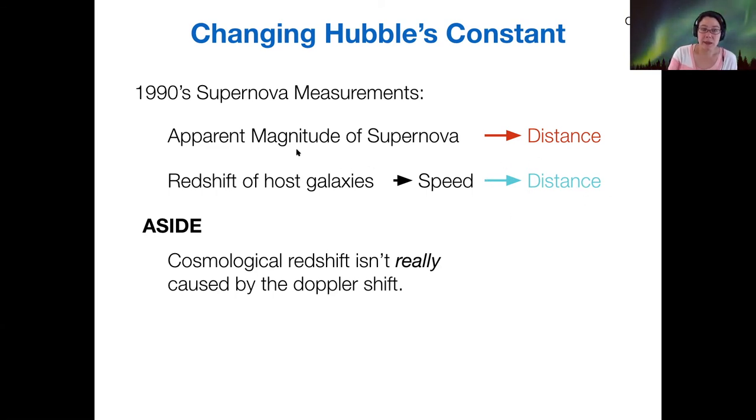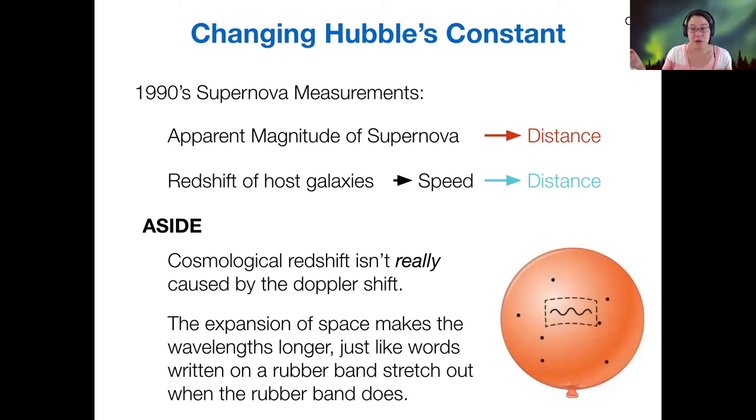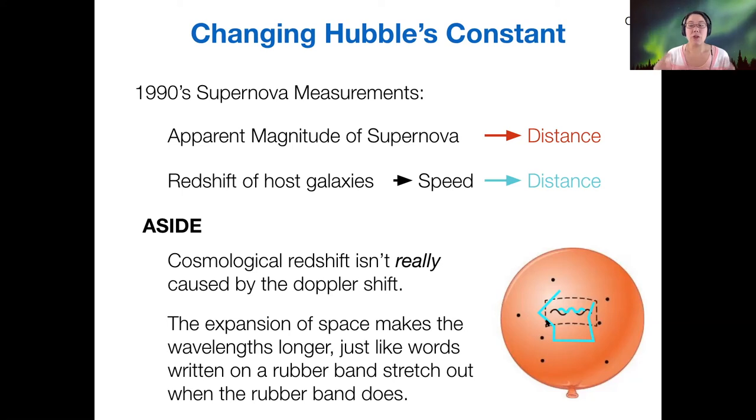And it's worth pointing out now that this is an imperfect way to think about Hubble's law as a method for calculating distance because the cosmological redshift is not really caused by the Doppler shift. So we think about moving objects causing Doppler shifts. So we think about redshift as being connected to speed. But really, the expansion of space just makes wavelengths in the universe longer. It's just as if you were going to draw something on a rubber band and stretch it out. It would stretch as the rubber band stretches, not because the words that you wrote got bigger, but because the space that they were written on got bigger.